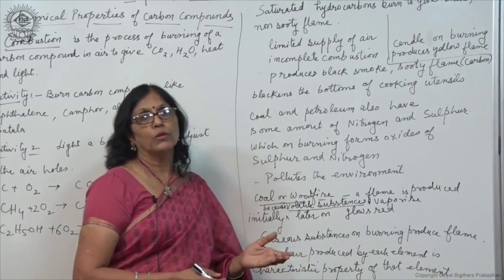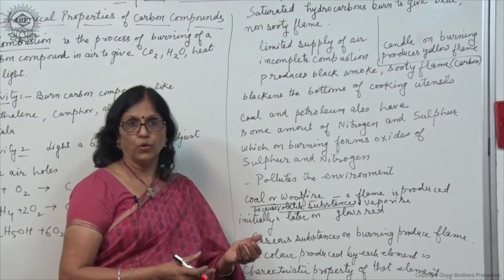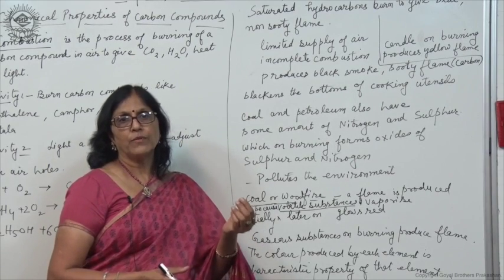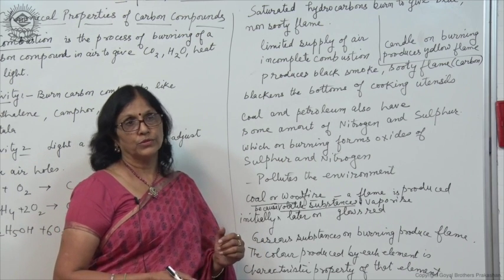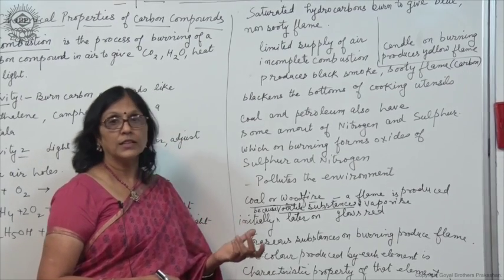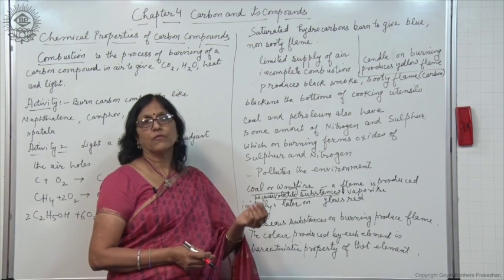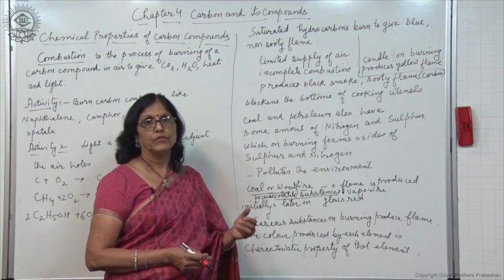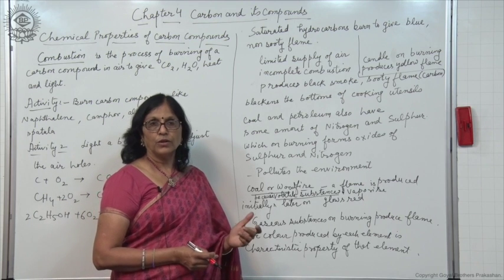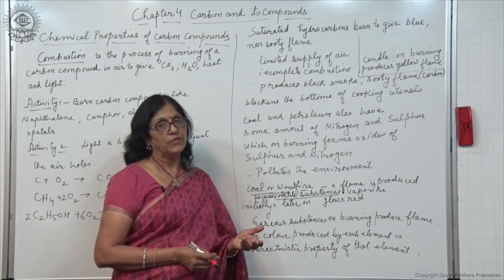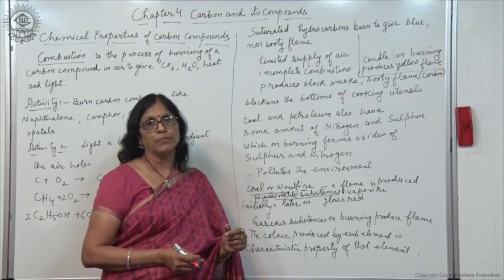You might have seen coal or wood burning in an angithi. Initially when coal or wood is burnt, it produces a flame only for some time. Later on, the coal or wood only glows red and flame is not produced. This is because initially the flame is produced when the volatile substances present in coal and wood vaporise and form gaseous vapours which burn to produce the flame. Later, because there are no more vapours or gaseous substances, flame is not produced and the coal and wood only glows. The flame is produced only when gaseous substances are burnt in air.